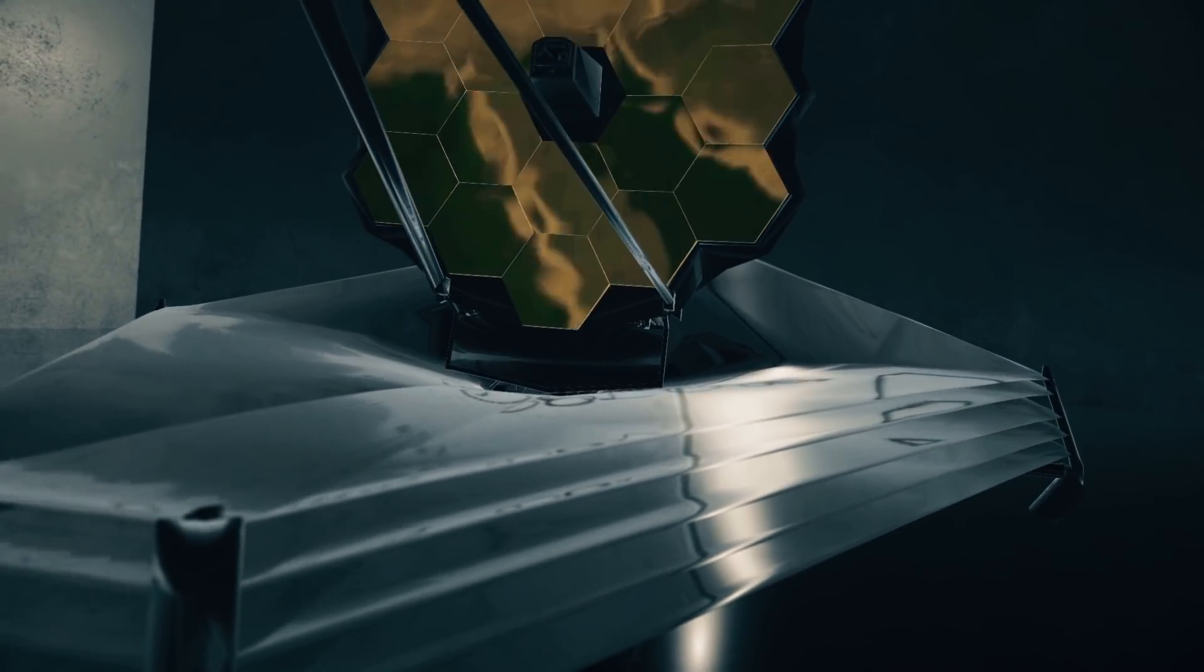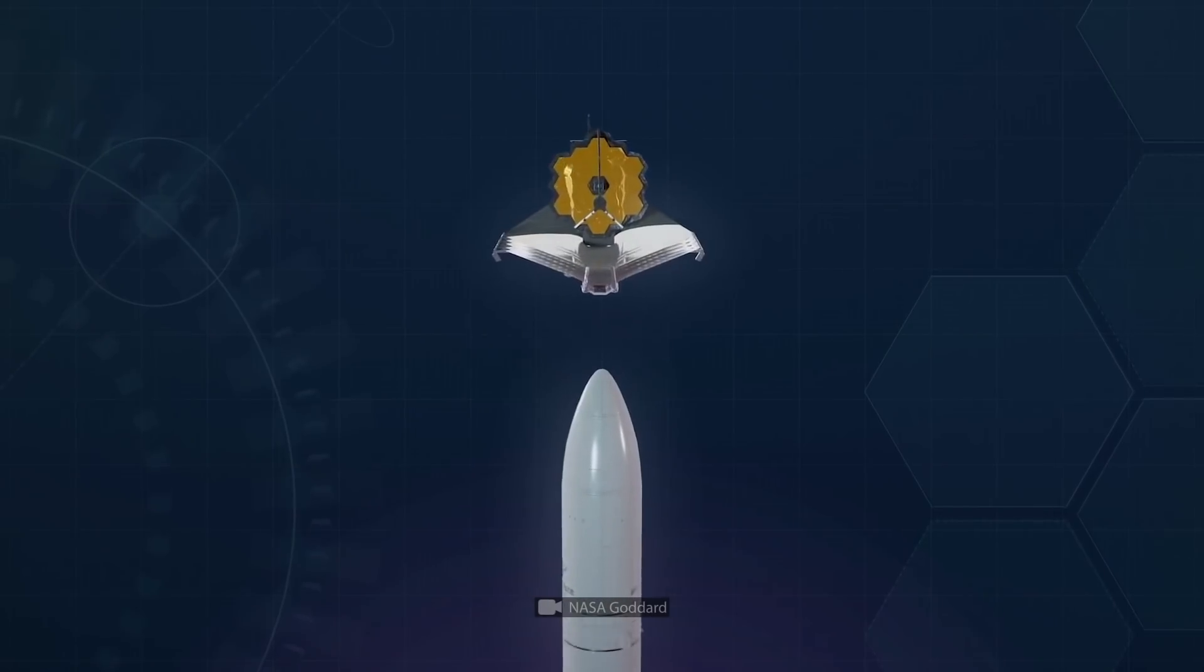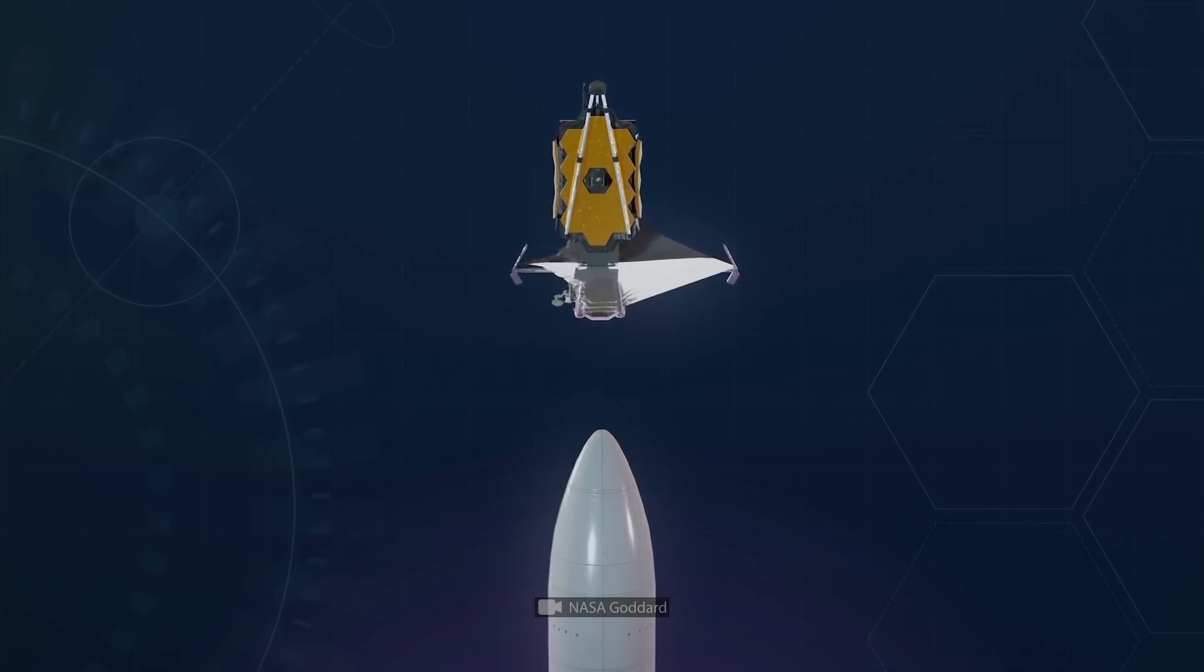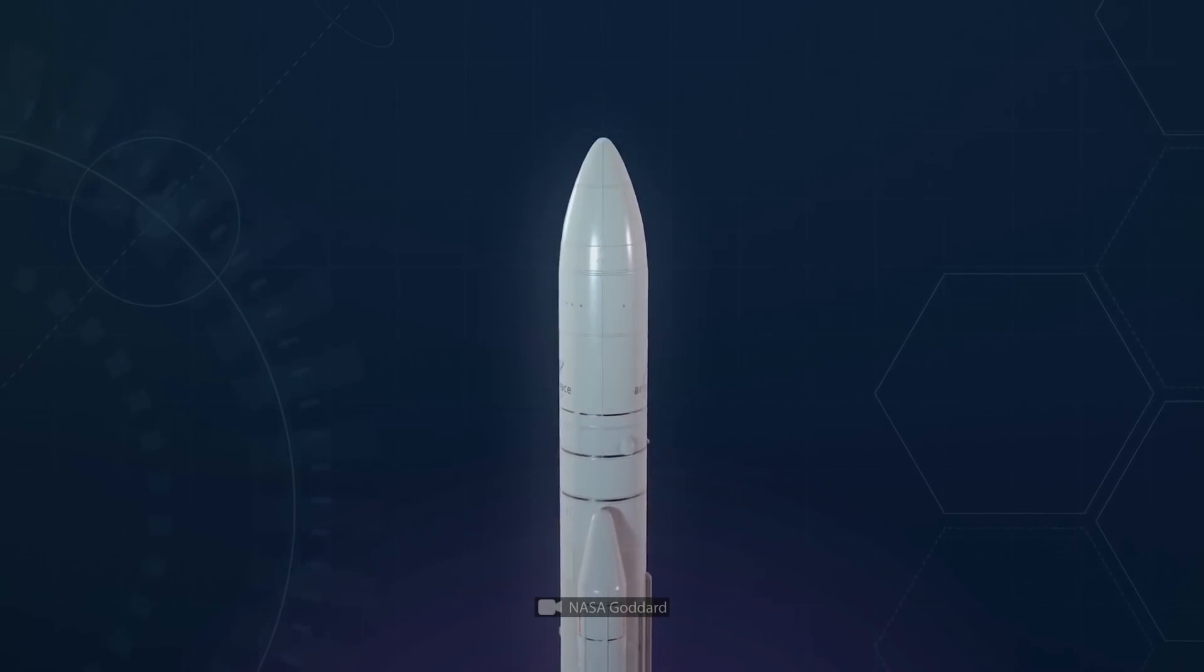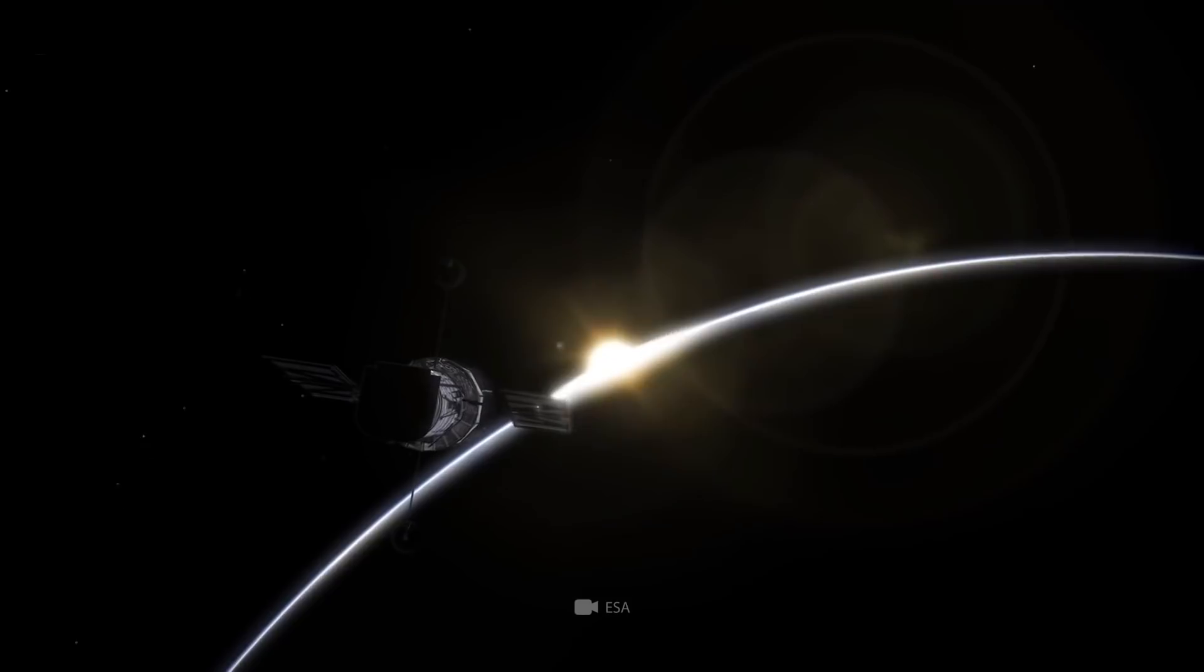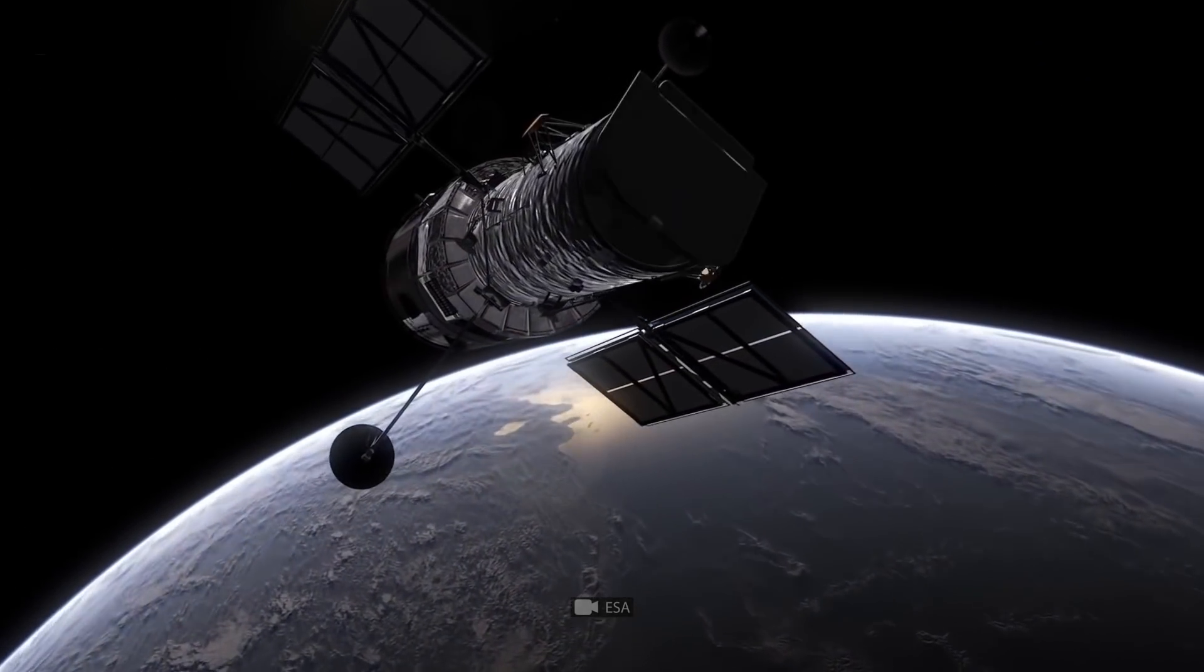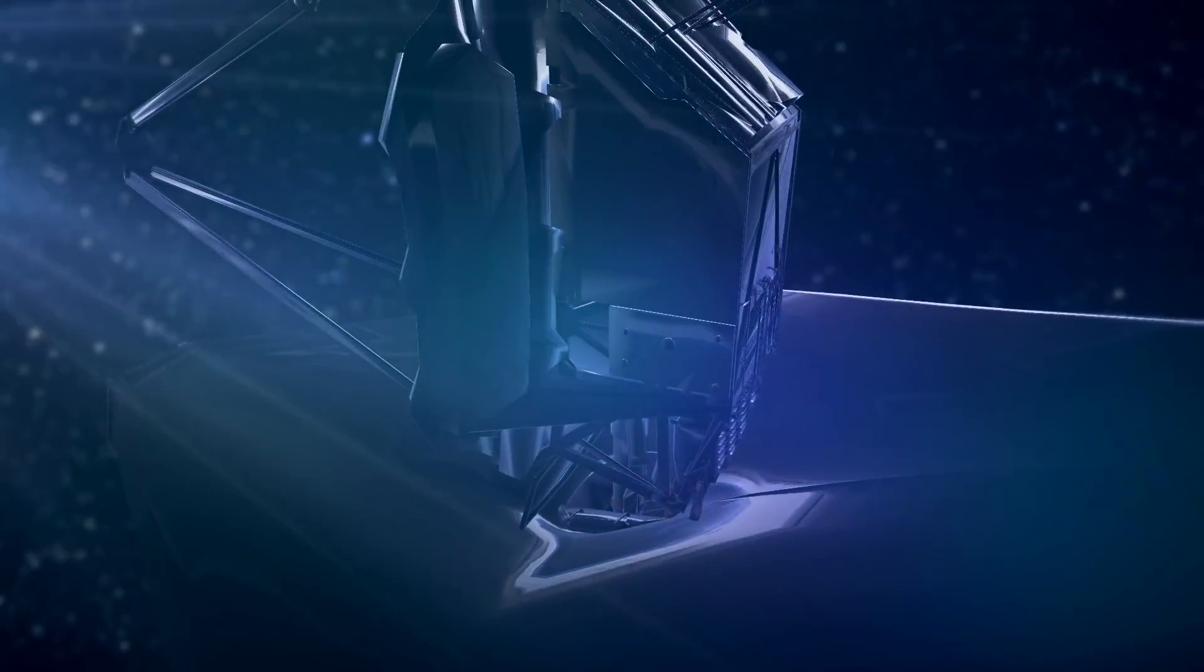However, the Webb can't be sent into space as it is because it's too big. Instead, it will be folded like origami. The telescope will be squeezed inside the Ariane 5 rocket in order to be transported into space, and then it will unfold and stay in space for at least five years. Unless it shares the remarkable fate of the Hubble, which has been working for over 30 years. But the Webb won't need that much time to start getting meaningful results.